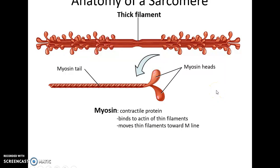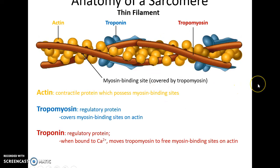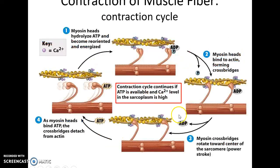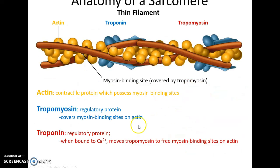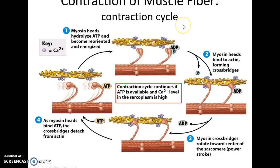The thick filament is made up of the protein myosin — a contractile protein that binds to actin and pulls the thin filaments toward the M-line. The thin filament is made of three proteins: actin, a contractile protein with a binding site for myosin; tropomyosin, a regulatory protein that covers that binding site; and troponin, a regulatory protein that binds to calcium ions.